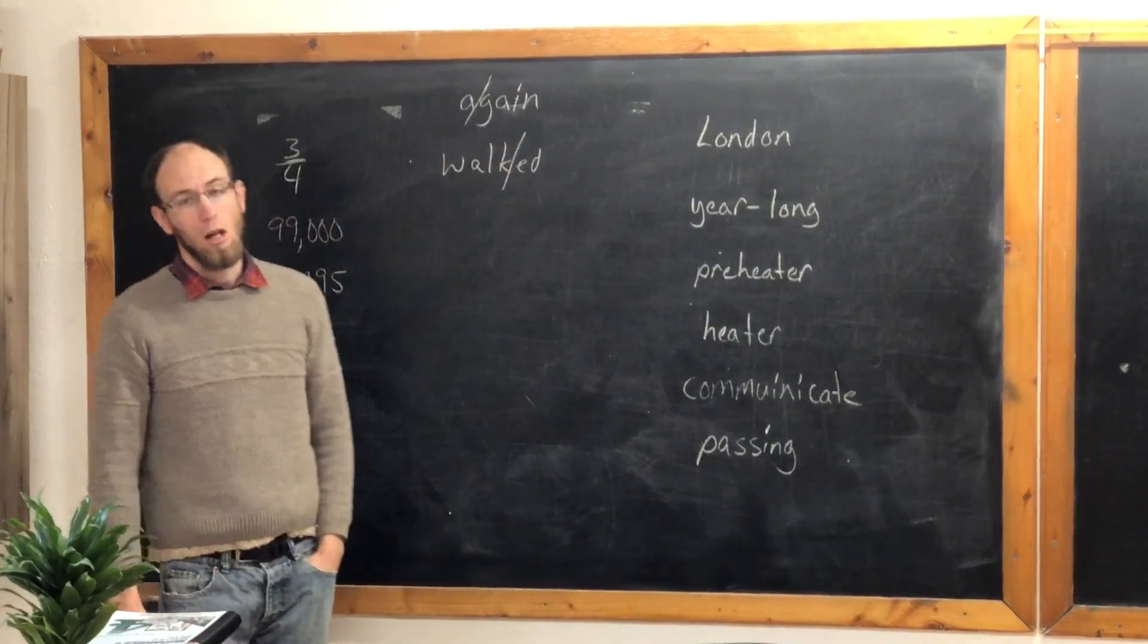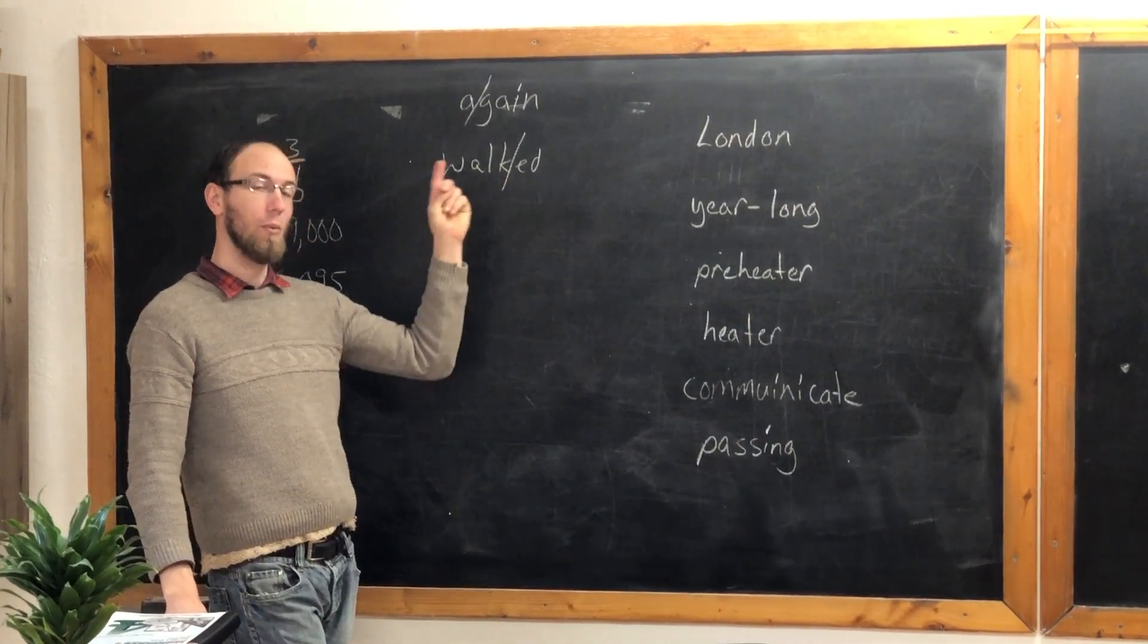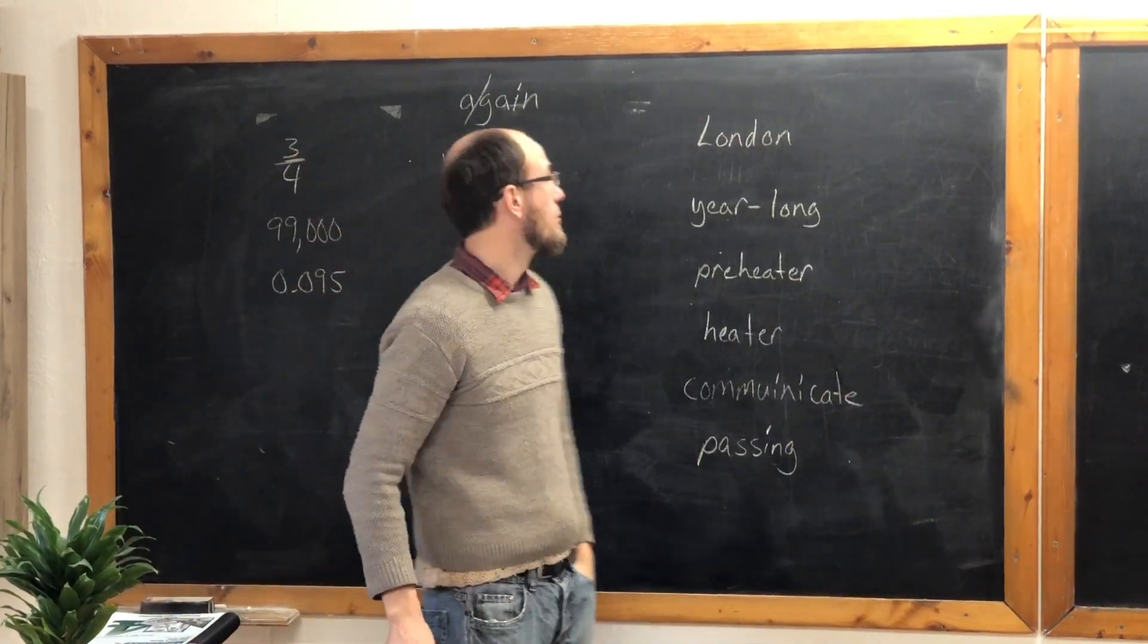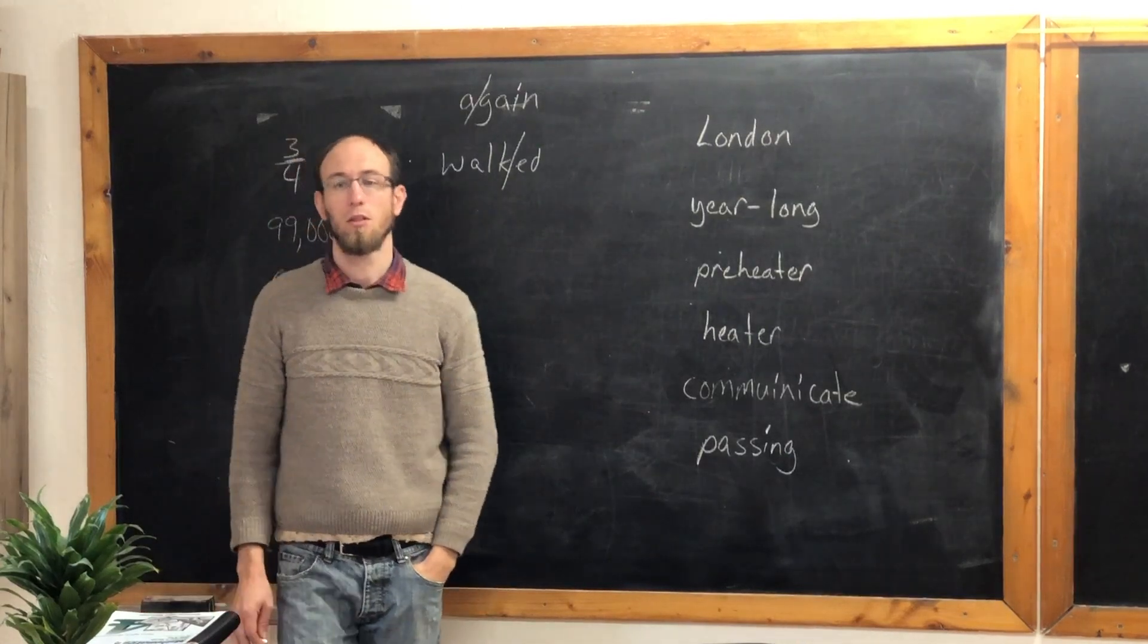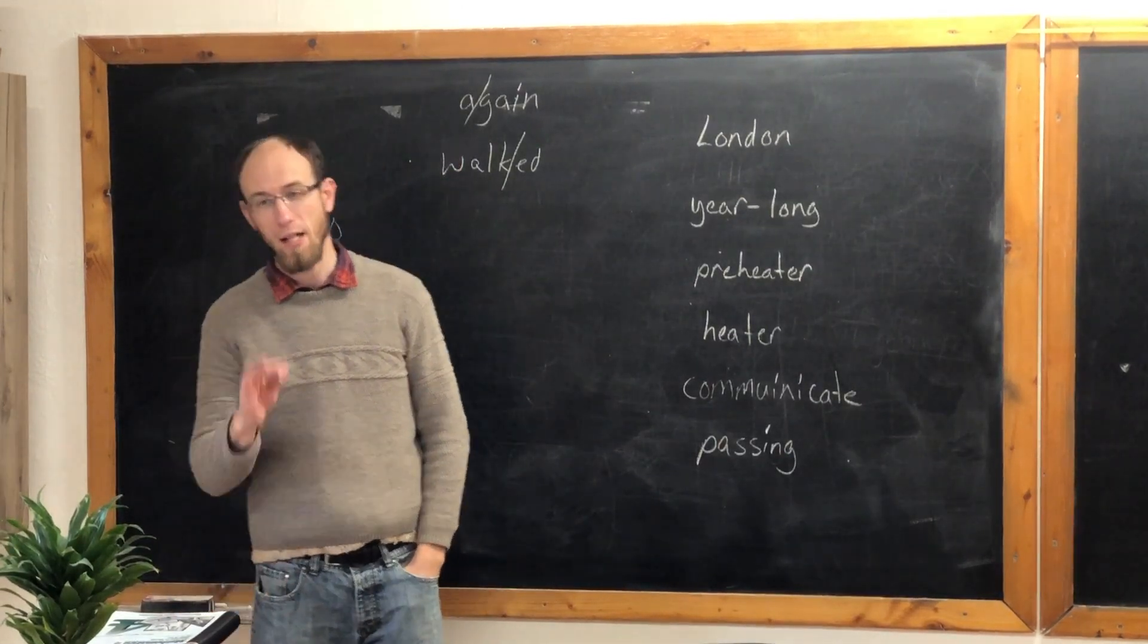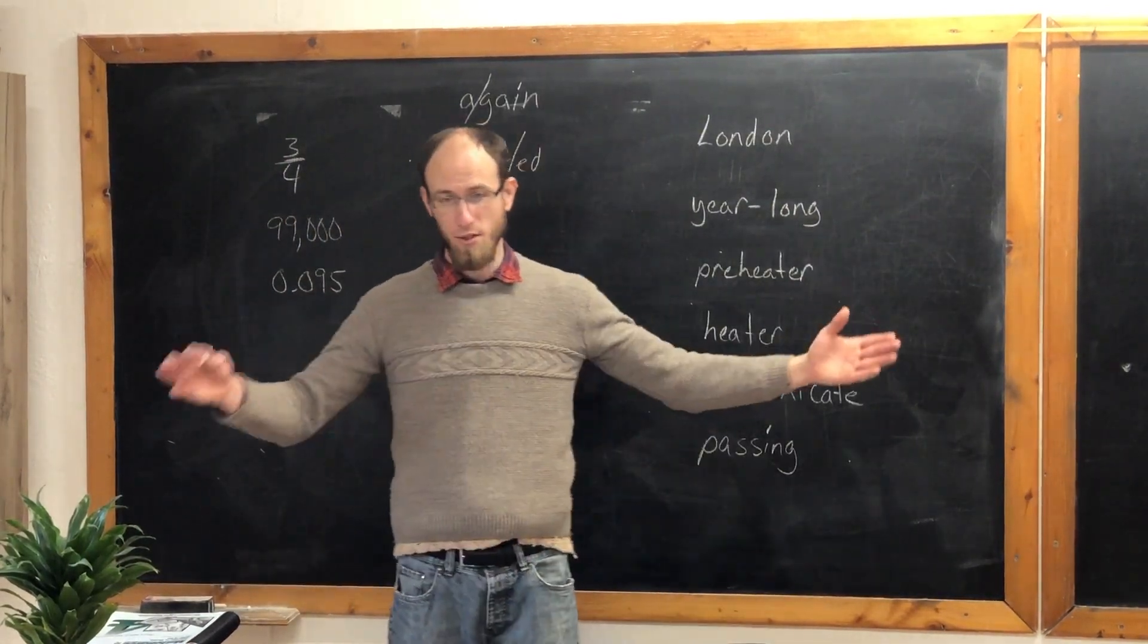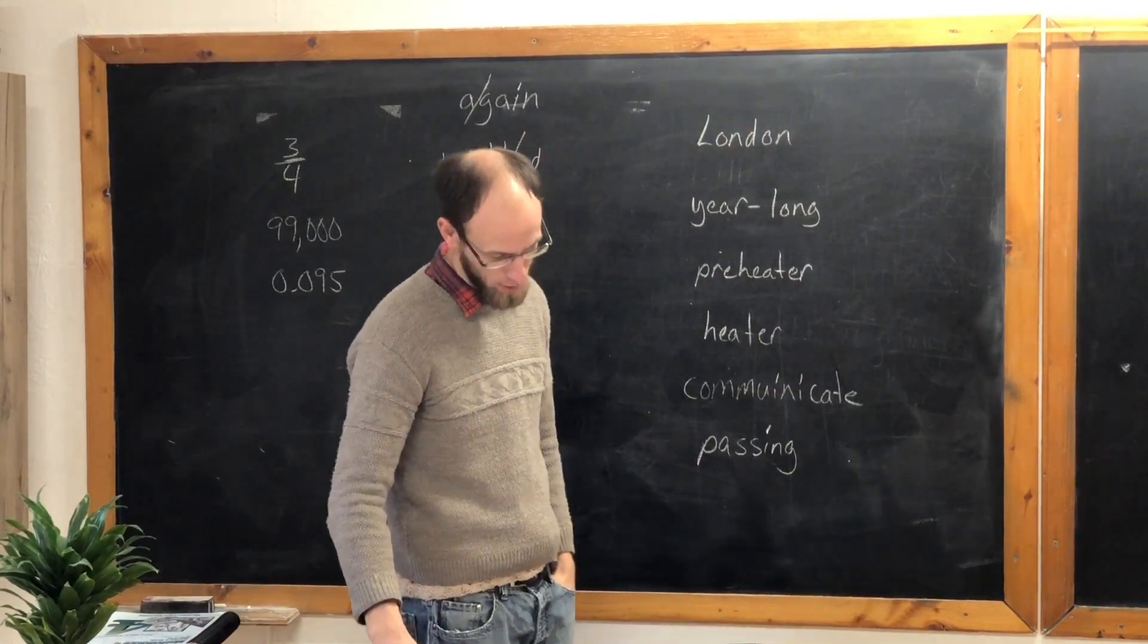The rule is still the same, that we cannot put two letters at the beginning of a line, or one letter at the end of the line, ever. Now we're going to talk about a few more rules. Can we divide the word London? No. Not today. We cannot divide proper nouns. So since London is a proper noun, it has a capital letter, we cannot divide it. Don't divide anything that starts with a capital letter.